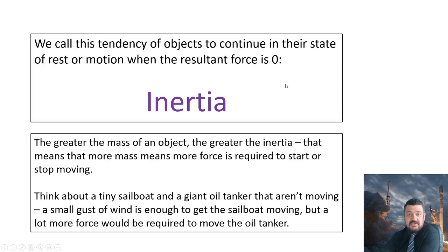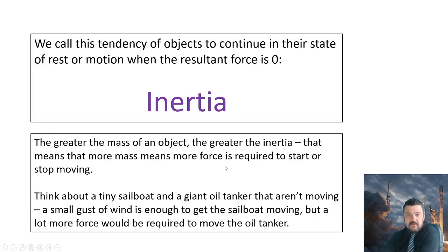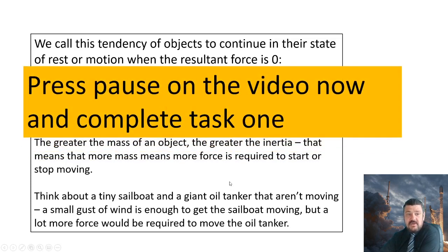We call this tendency of objects to continue in their state of rest or motion when the resultant force is zero — inertia. The greater the mass of an object, the greater the inertia, which means more mass means more force is required to start or stop moving. A small gust of wind will get a tiny sailboat moving, but a lot more force is required to move a giant oil tanker. The same applies to pushing a car — which is more difficult to push, a really heavy car or a little shopping trolley? It's to do with mass. Pause the video now and complete task one. When you're ready to continue, press play.